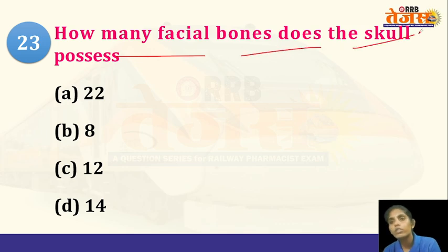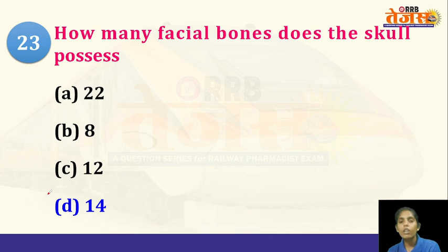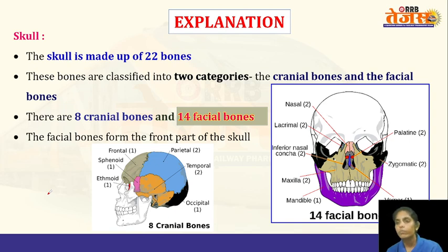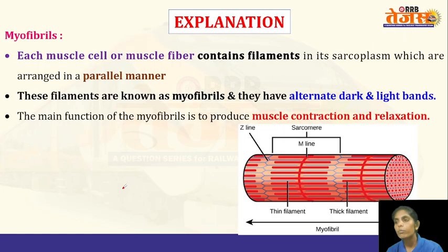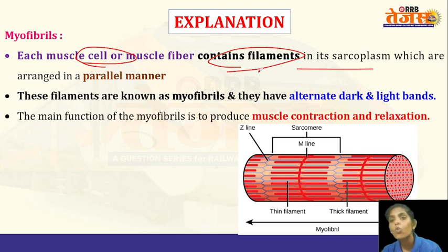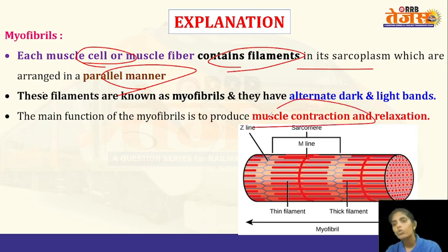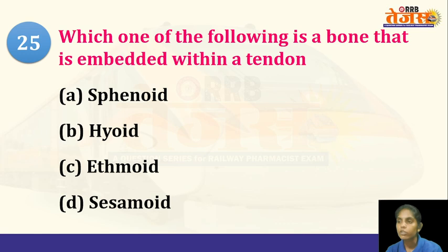Next: how many facial bones does the skull possess? The answer is 14. The skull has 22 bones: 8 cranial bones and 14 facial bones. Next question: which structure has alternate dark and light bands — fascicles, sarcolemma, myofibrils, or fascia? The answer is myofibrils. Myofibrils are muscle fibers containing filaments arranged in parallel in the sarcoplasm, creating alternate dark and light bands. The function of myofibrils is to produce muscle contraction and relaxation.